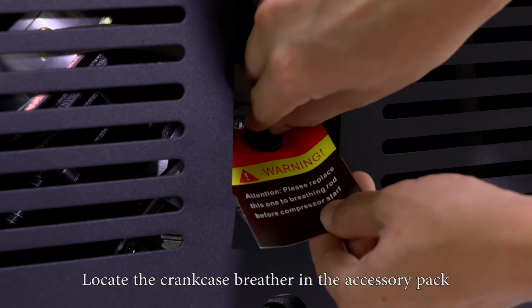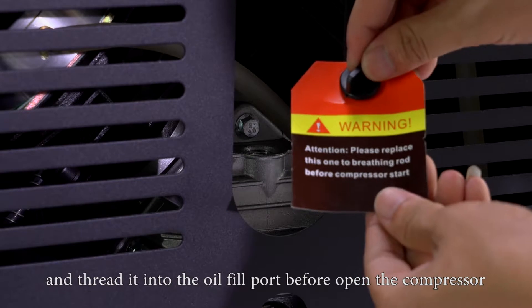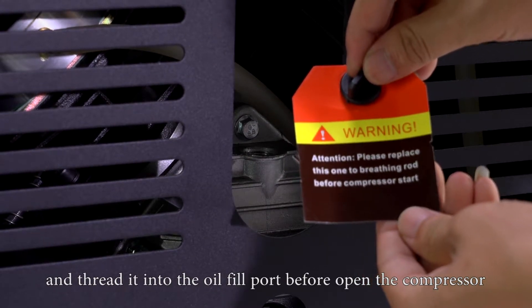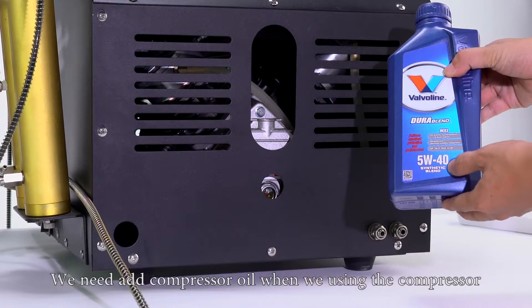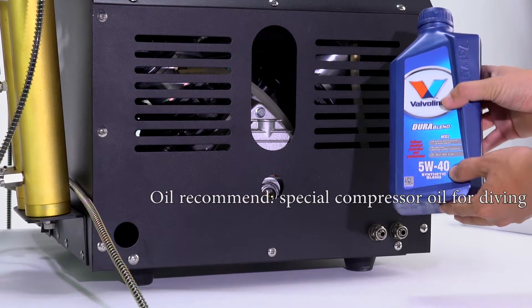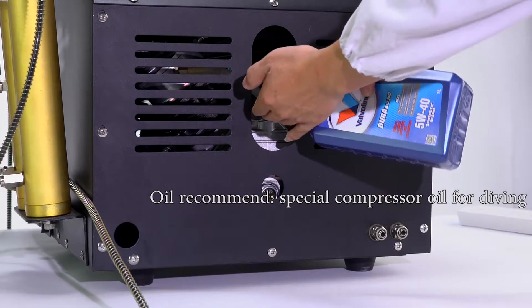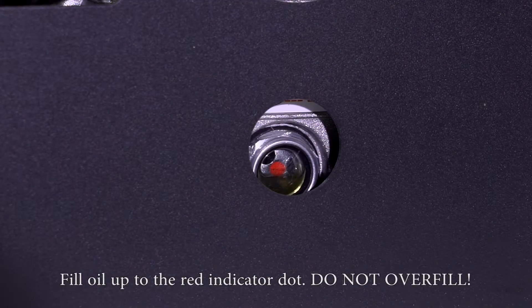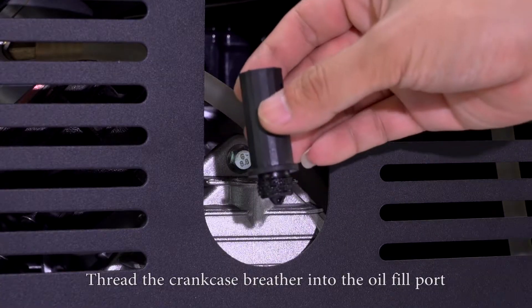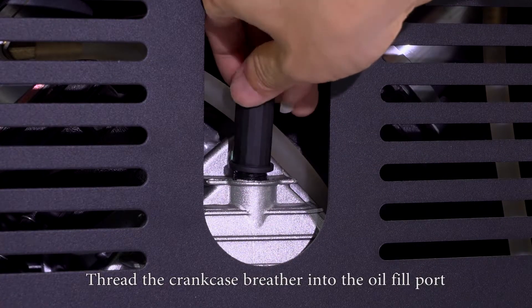Locate the crankcase breather in the accessory pack and thread it into the oil fill port before opening the compressor. We need to add compressor oil when using the compressor. Oil recommend, special compressor oil for diving. Fill oil up to the red indicator dot. Do not overfill. Thread the crankcase breather into the oil fill port.